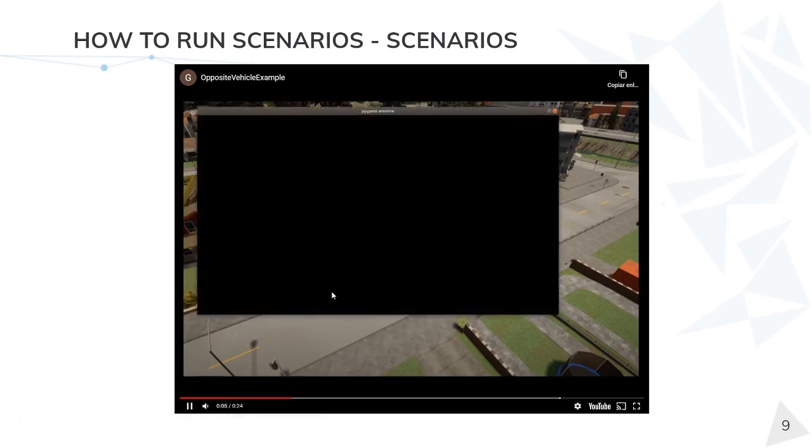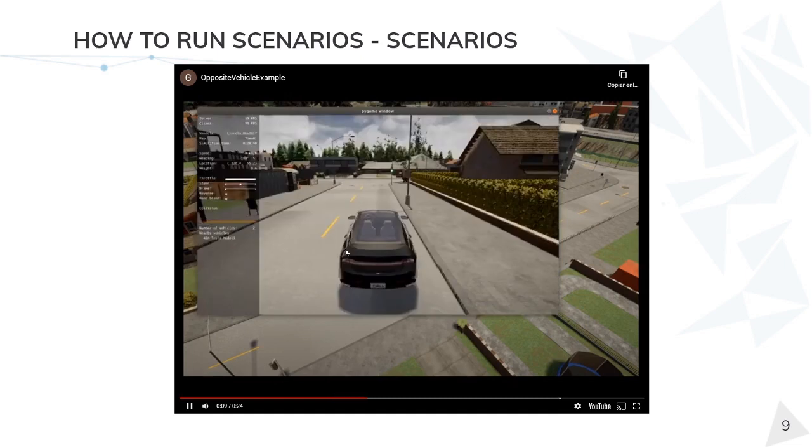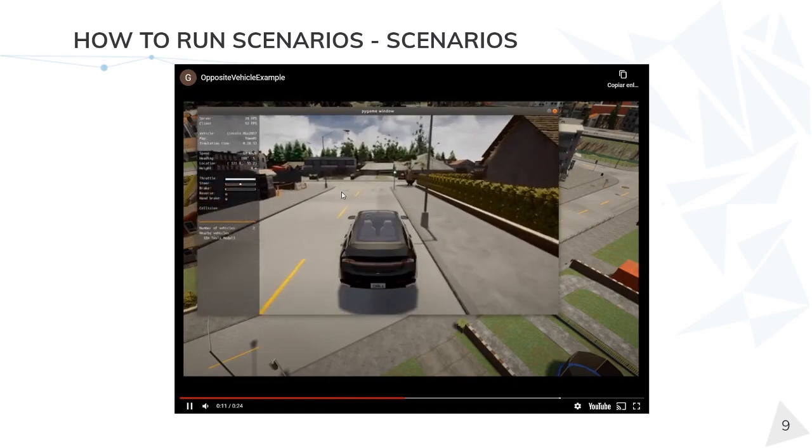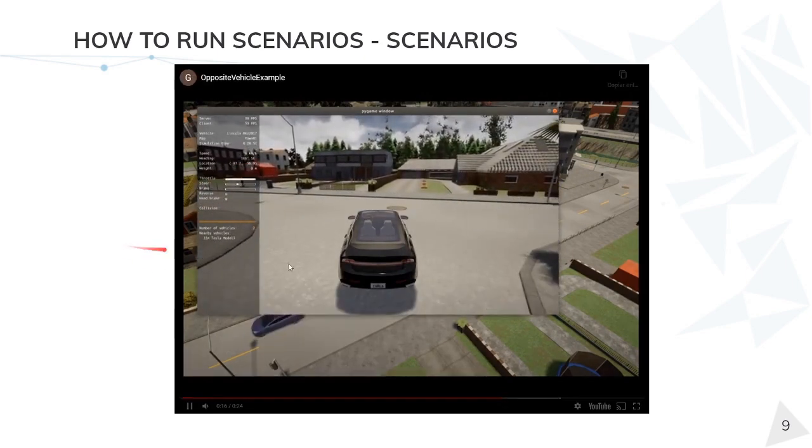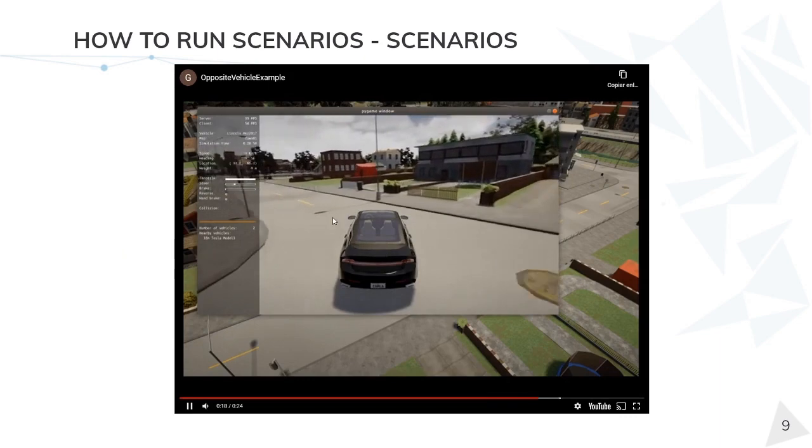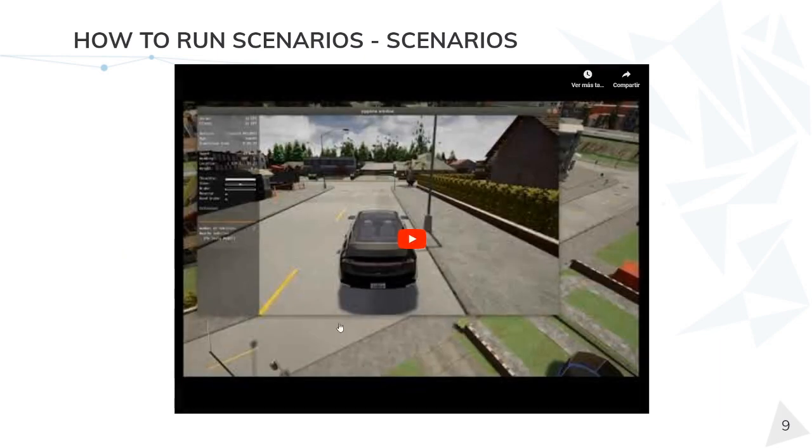Here, we have activated the manual control, and as you'll see in a moment, we're going to have to brake because the other vehicle has run the red light. Then, after this behavior has ended, we just have to drive a little bit before ending the scenario.